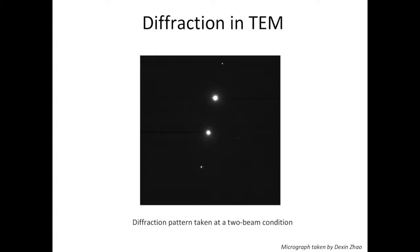If you tilt the crystal away from the low index zone axis along one of the Kikuchi bands, we'll talk more about Kikuchi bands in the future, then you can reach a condition called two-beam condition. In the two-beam condition, you only see two bright spots.